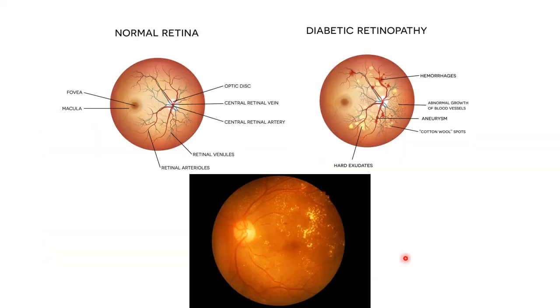This picture shows normal vision. This picture shows the vision of a person with diabetic retinopathy. This is the fundus picture of a normal retina. These are the fundus pictures of a person with diabetic retinopathy.